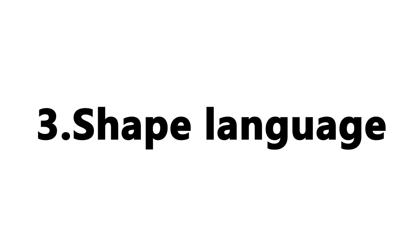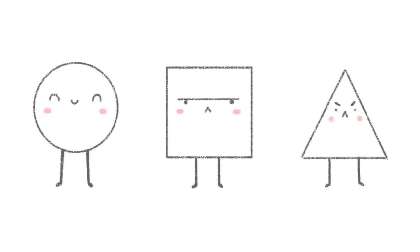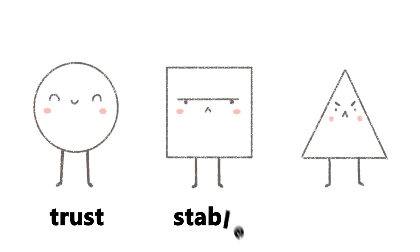Number 3 is shape language. This is the very most important thing in character design. Look at these shapes — these shapes will tell you about some personality. Circle represents trust. Rectangle represents stability. Triangle represents unevenness and danger. We use triangles in many places like dangerous signs.